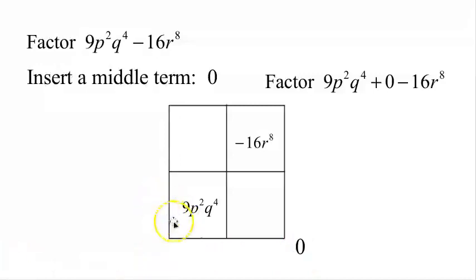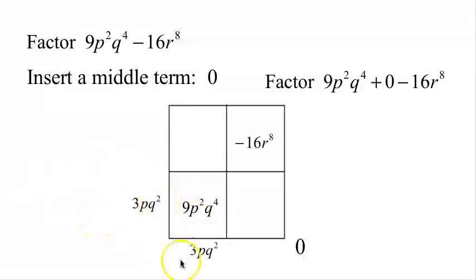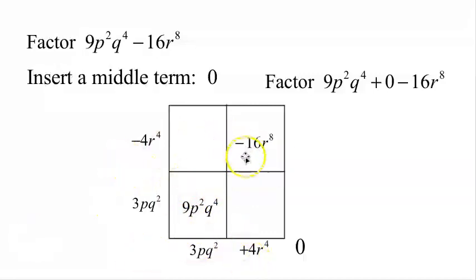How do you make 9? 3 times 3. How do you make p squared? p times p. How do you make q to the 4th? q squared times q squared. So 3pq squared times 3pq squared is 9p squared q to the 4th. How do we make negative 16r to the 8th? How about 4r to the 4th and negative 4r to the 4th? Notice 4 times negative 4 is negative 16, and r to the 4th times r to the 4th is r to the 8th. So that works.